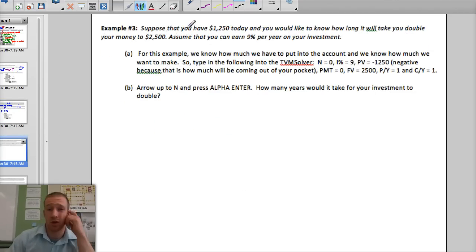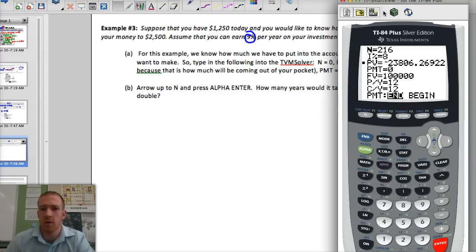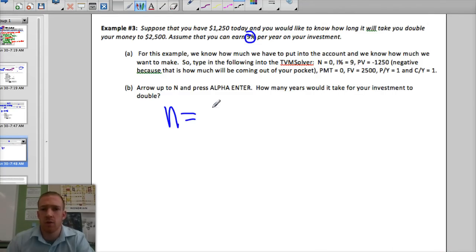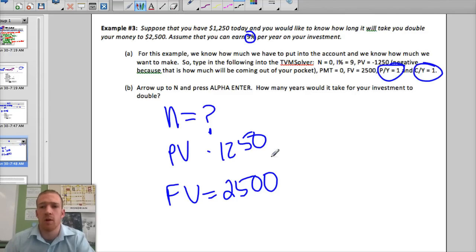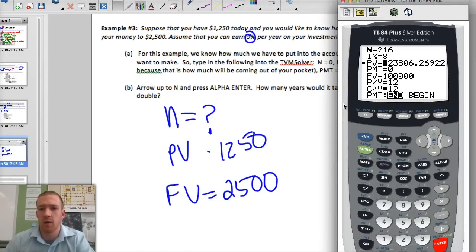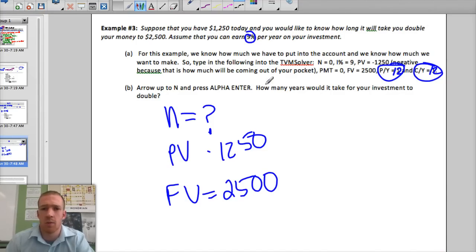So one more example here. Suppose we have $1,250 and we want it to double. So double, that would be $2,500. You can earn 9% per year on your investment, let's say. And let's say this is compounded, we'll just say once a year again. So what we're going to do is go to our TVM solver. Here our N is going to equal... Oh, we don't know what our N is. That's what we're looking for. So our PV is going to be $1,250. Our FV is going to be $2,500. Our payments are 0. We're going to switch these back to 1, because it's just saying we're compounding it once a year. And then we're going to solve for N. Actually, we're going to do... My bad. It's 12 times a year, because we're going to compound it monthly.